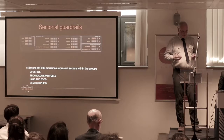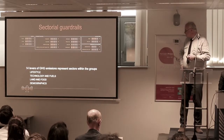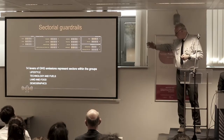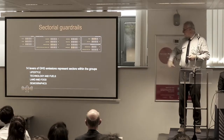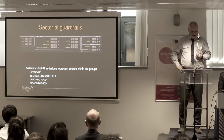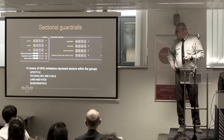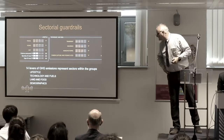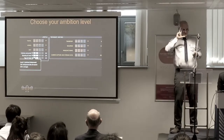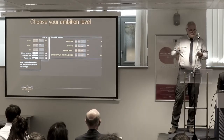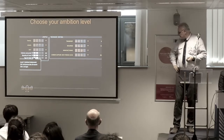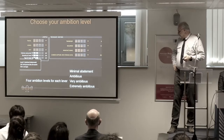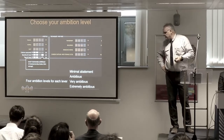The main ingredients are so-called sectoral guardrails, which we also call levers. At the moment we have 40 levers in sectors like lifestyles, technology and fuels, land and food, and demographics. We also have sub-levers, indicated here by yellow bars. You can make lever selections — for example for diets, we have three sub-levers: calories consumed, quantity of meat, and type of meat. We have four settings: level one is minimal abatement, then ambitious, very ambitious, and extremely ambitious abatement.